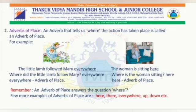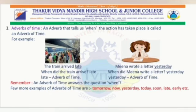A few more examples of adverbs of place are: here, there, everywhere, up, down, etc. Third, adverbs of time. An adverb that tells us when the action has taken place is called an adverb of time. For example: the train arrived late. When did the train arrive? Late. Here, the word 'late' is an adverb of time. Meena wrote a letter yesterday. When did Meena write a letter? Yesterday. The word 'yesterday' is an adverb of time. Remember, an adverb of time answers the question 'when.'